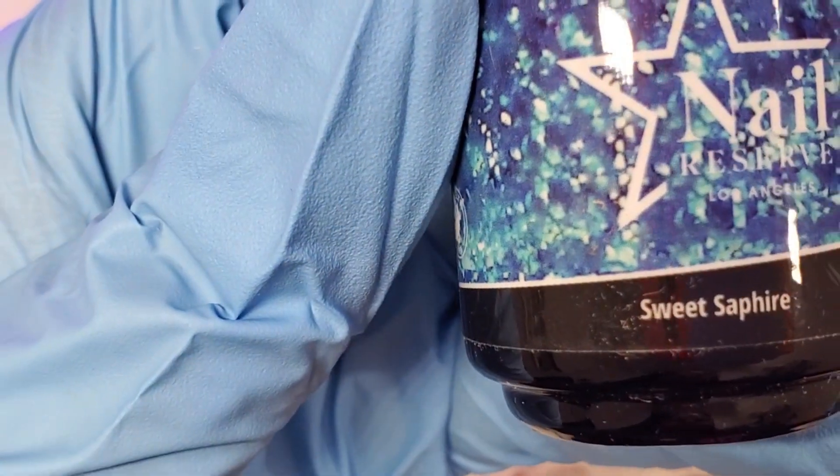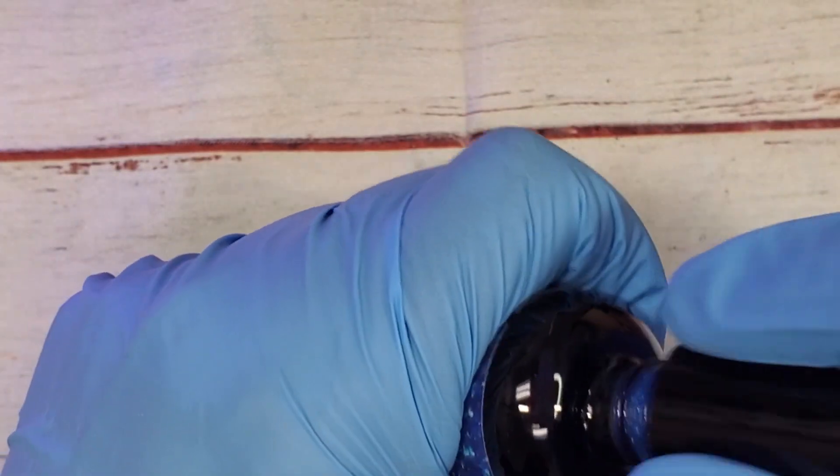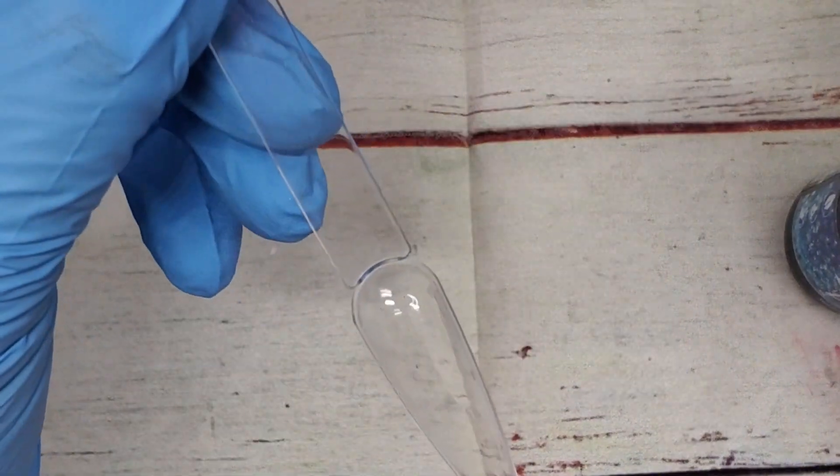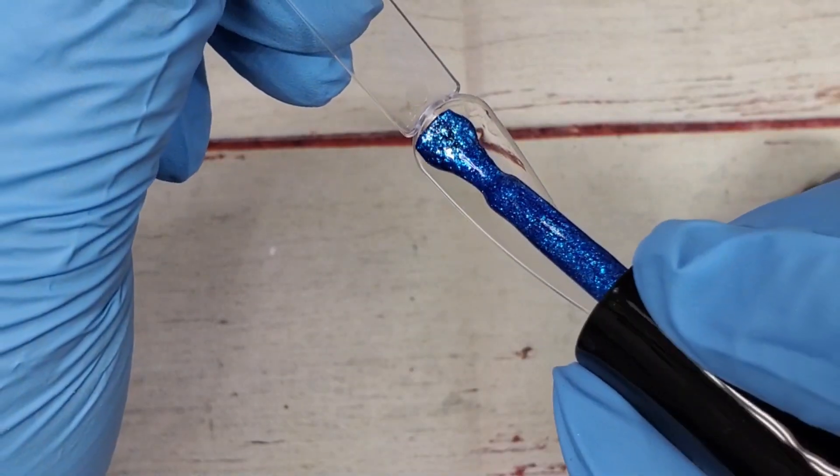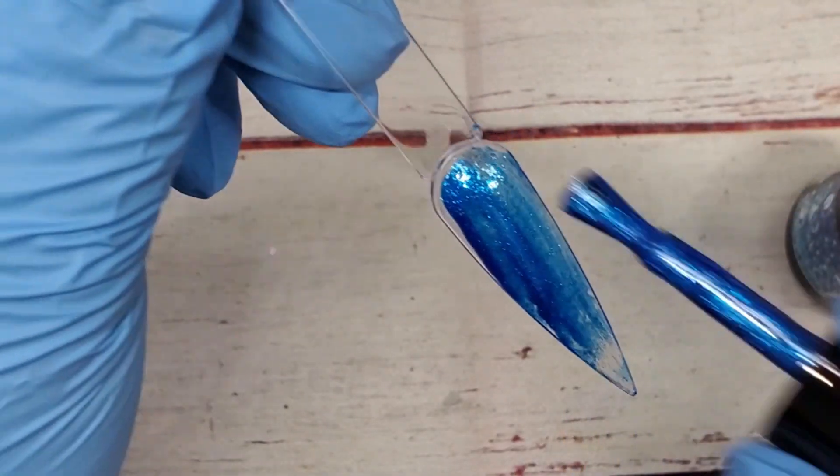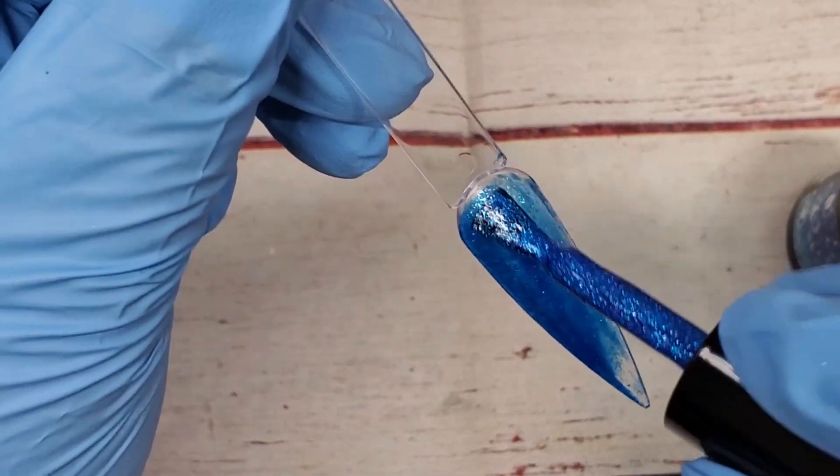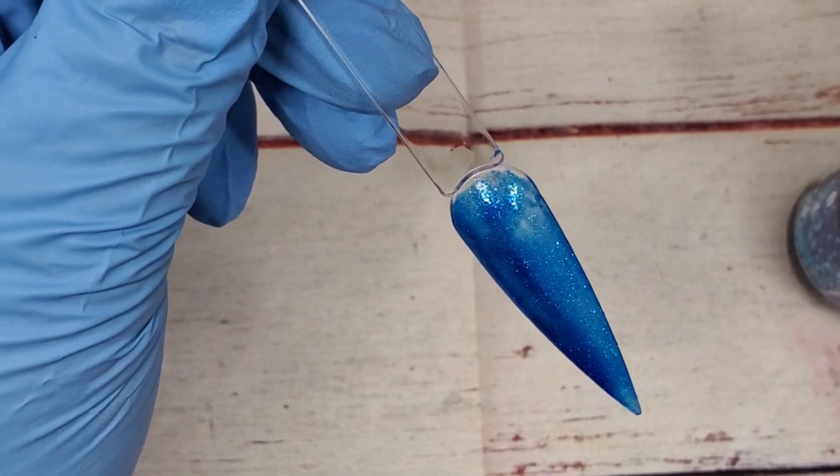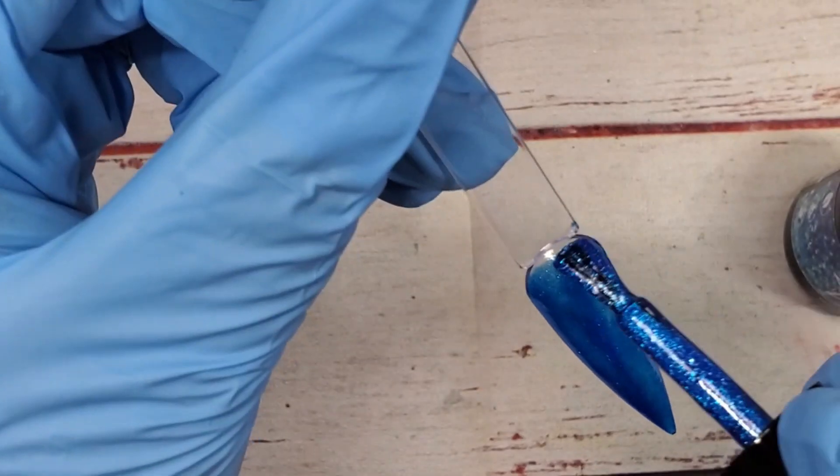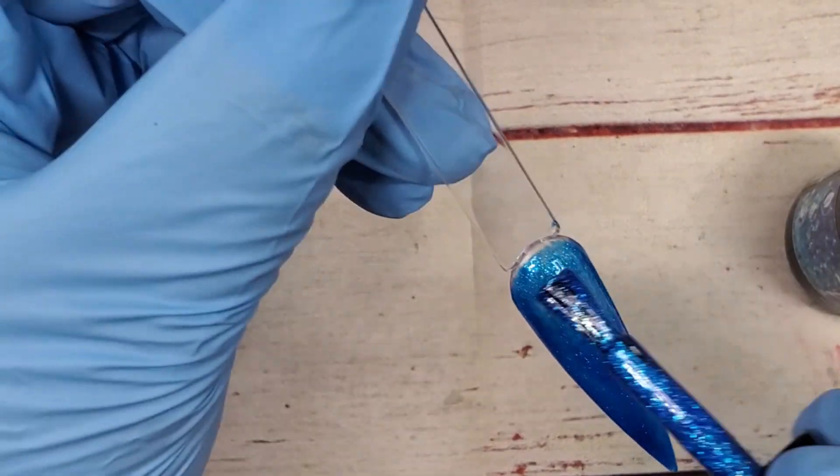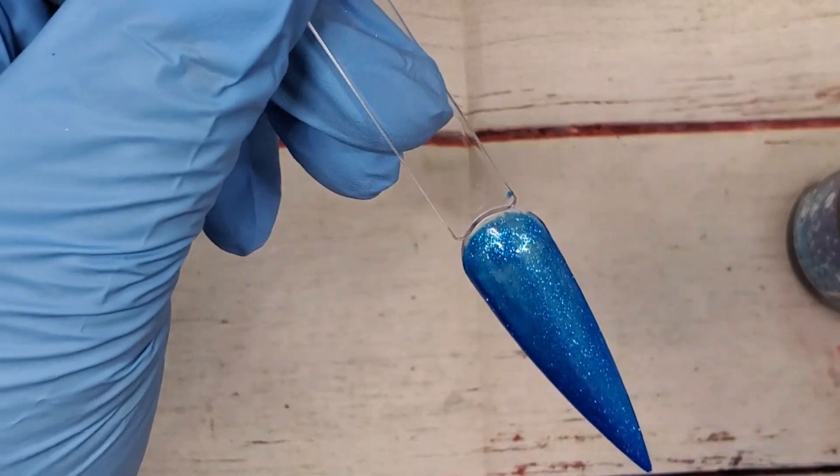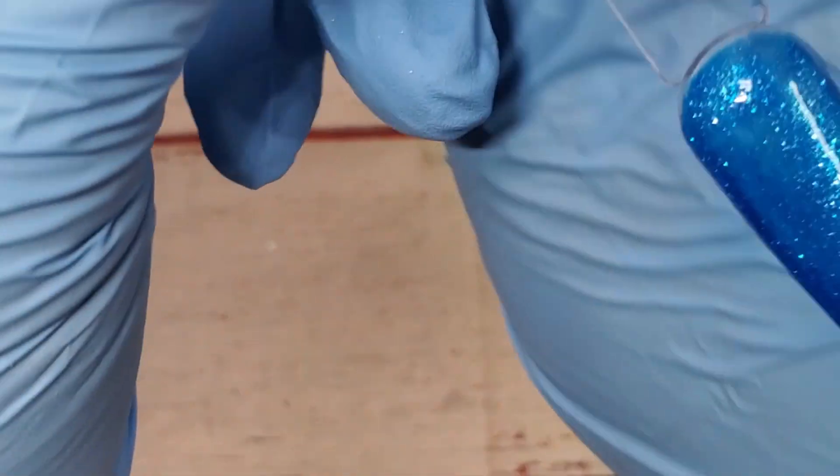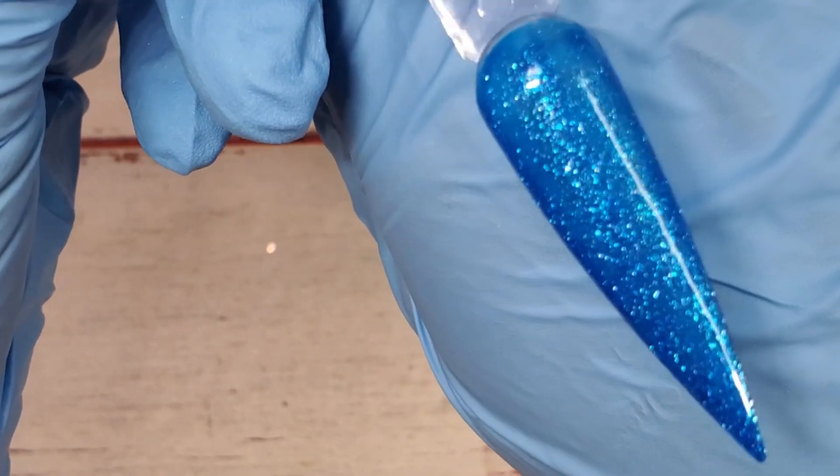Okay, so the next color is Sweet Sapphire, and this one is a glitter. So pretty. Oh, that is gorgeous. I don't know if it's me, but these have like a sweet scent to them. That is a gorgeous blue, so pretty.